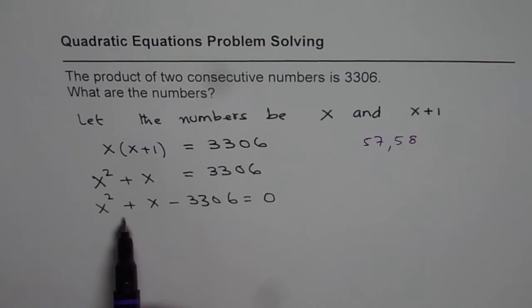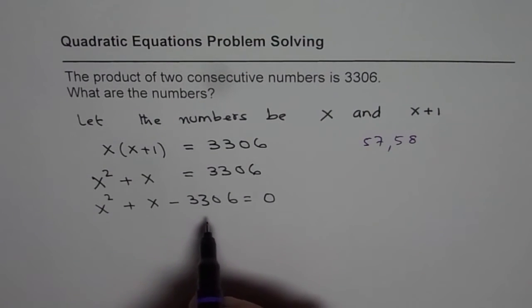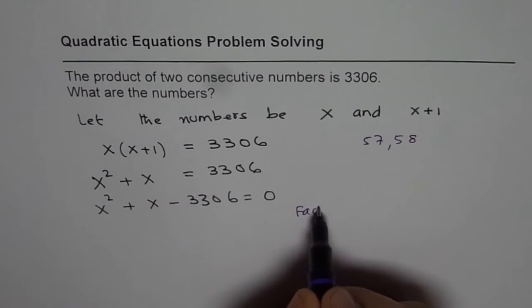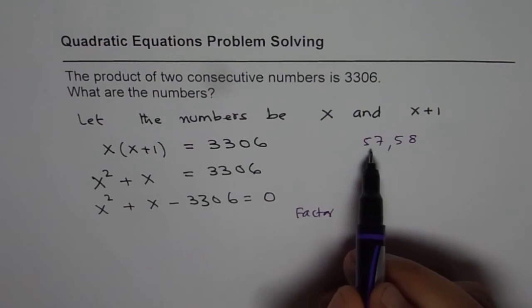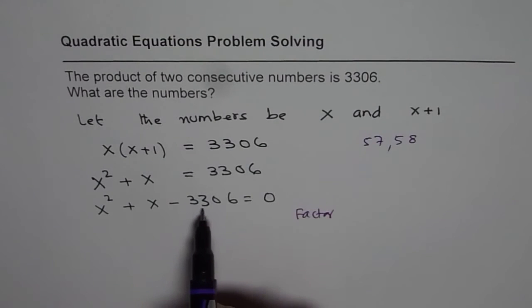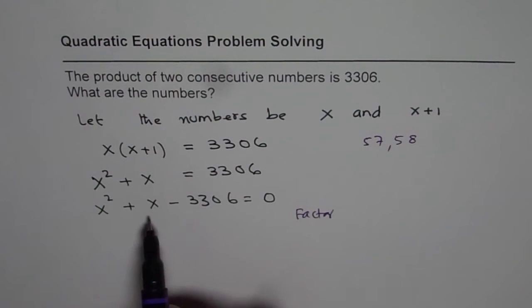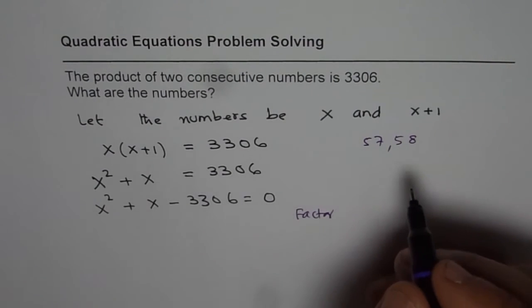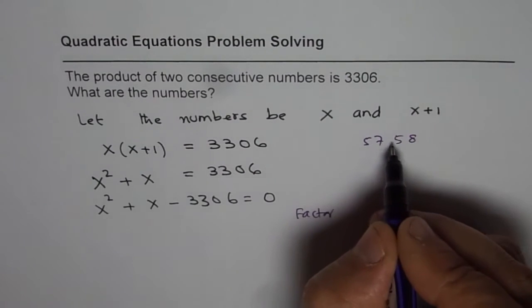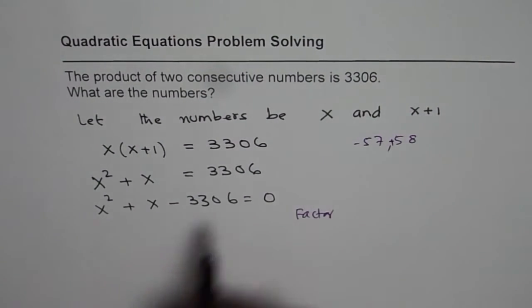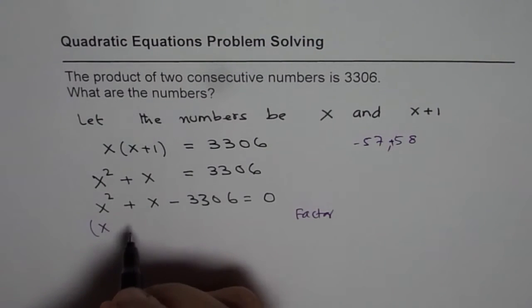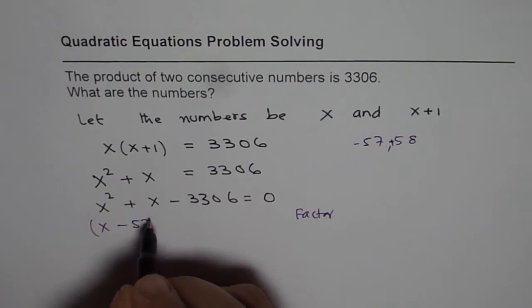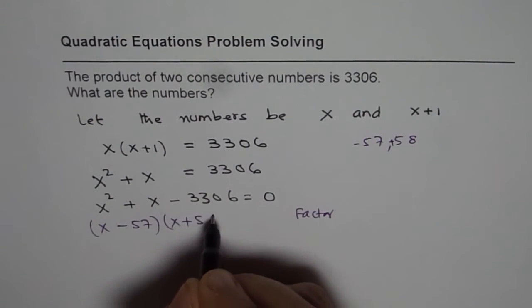Now, the idea is, how to get the answer otherwise? So now the technique is, you could either factor. Now, since we know that by square rooting, these two numbers when multiplied gives you 3306, and we need difference or sum of these numbers as plus 1, that means we can take the bigger number as positive and the smaller number as negative. So I can actually factor this and I can write this as x minus 57 times x plus 58.